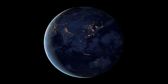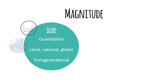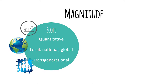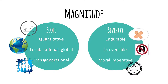We can also think about magnitude in more nuanced ways. We might consider the scope of the impact — this could be quantitative, comparing numbers such as thousands versus hundreds of thousands of people impacted, or thinking in terms of local, national, or global impacts. Sometimes impacts are transgenerational, meaning the current living generation will feel the effects but the next generation will too. Severity is another way to think about magnitude: how bad is the outcome? Some impacts are unpleasant but endurable — an economic recession may decrease quality of life but has the potential to turn around. Other impacts, like death or loss of a culture's history, are irreversible. Finally, you can argue that an impact will disproportionately affect a certain population, such as native peoples or the elderly, and thus we have a moral imperative to prevent it.